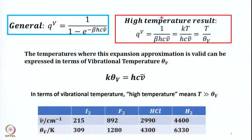One meaning of the characteristic vibrational temperature is that above this temperature — when the actual temperature is much larger — you can use the high-temperature expression to calculate qv. If the actual temperature is lower than the vibrational temperature, you use the general expression. As we will see, if the temperature is low, not many upper vibrational levels are significantly populated.